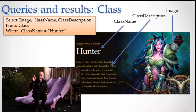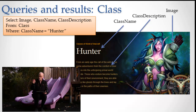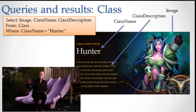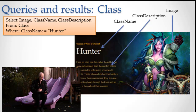Let me work it forward. I have this database set up as I showed you, and I make a query: give me the image, the class name, and the class description from the class table where the class name equals hunter. It gives me back those three pieces of information, and I thread them into this presentation. The way I do that is I have a template that has all the display parameters — it says that 'hunter' is going to be this color and this big. I get the word 'hunter' from the database, but the formatting is all in the template, and that's what produces this presentation.